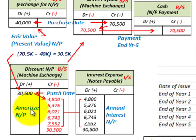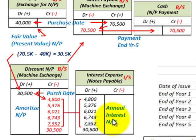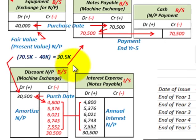Going back to the discount on notes payable, we amortize that thirty thousand five hundred dollar amount down to zero by the end of the fifth year, per the amortization schedule. Each year we credit the discount on notes payable for the amortization amount and debit interest expense for the same amount. The interest expense is recognized on the income statement, while the discount on notes payable is carried on the balance sheet.